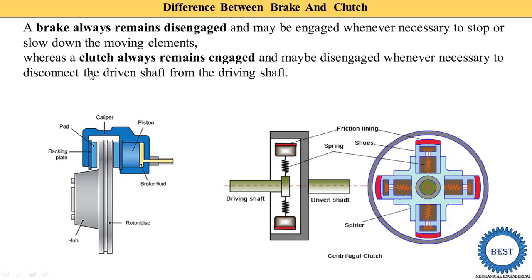When we need to change the gear, we press the clutch. When we press the clutch, the driving shaft and driven shaft are no longer in connection — they are disengaged — and we change the gears. When the gears are changed, the gear position changes and the speed of the vehicle also changes. So, the brake is always in the disengaged position and the clutch is always in the engaged position.